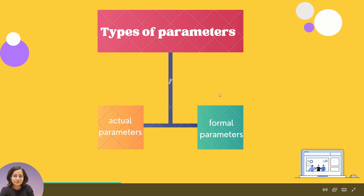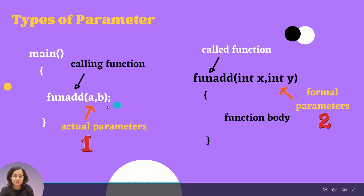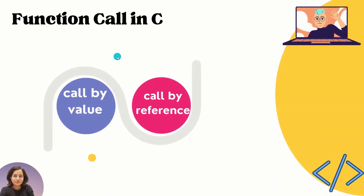Here I have taken a simple example. In main, I am calling a user-defined function called 'add'. When we call a user-defined function from main, it is called the calling function, and the parameters written there are called actual parameters. The parameters written in the user-defined function definition are called formal parameters.